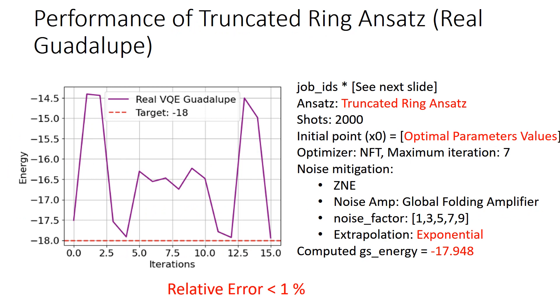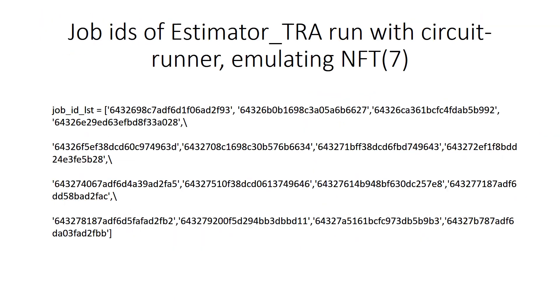By comparison, the performance of the truncated ring ansatz is much better. You can see on the graph shown on the left that the values are much closer to the target value of the ground state energy. The experimental settings are the same as those in case of the untruncated ring ansatz. However, in this case, the relative error is less than one percent. At this point, I should remind that because this graph was obtained by 16 iterations of the NFT optimizer, those were run as circuit runner jobs whose IDs are shown over here for your reference.